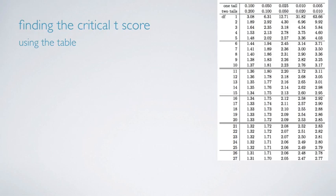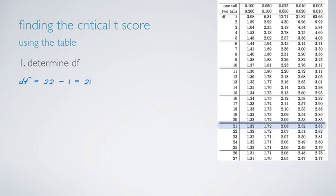To find the critical t-score using the table, step 1 is to determine the degrees of freedom. We had 22 observations, so 22 minus 1 gives us 21 degrees of freedom. Go to the table and locate the row for 21 degrees of freedom — degrees of freedom are listed in the first column. Scroll down to row 21, and the critical value we're interested in will be somewhere on that row. Next, we need to figure out which column to use based on our confidence level, but the table only provides tail areas.